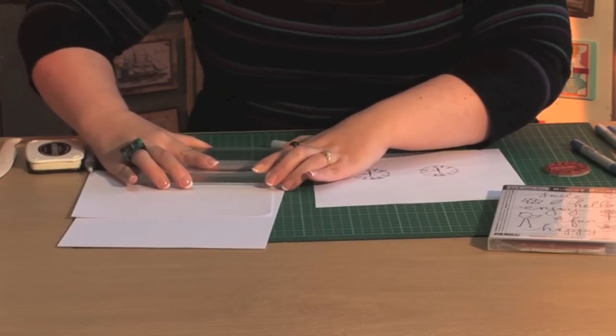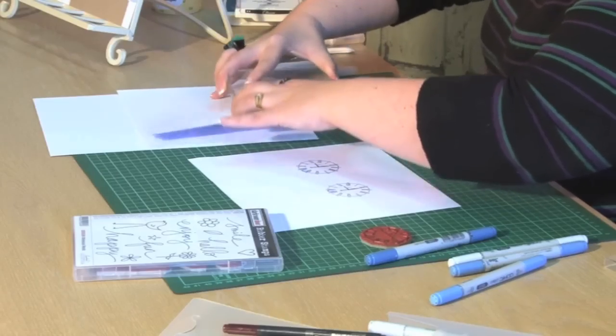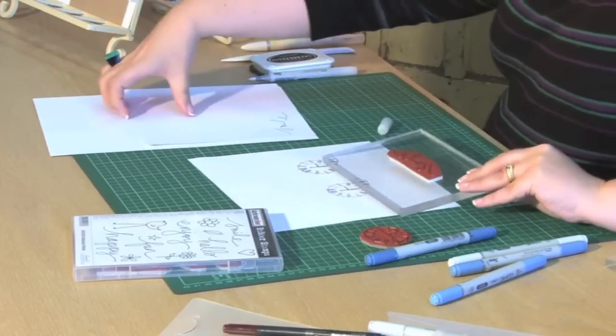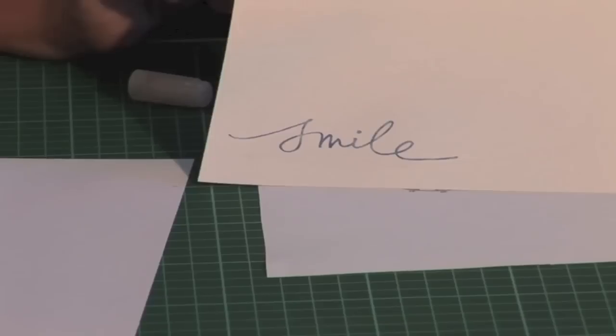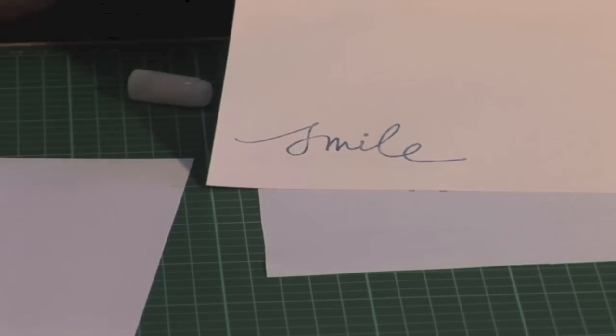When you stamp it and the Copic marker ink hits that colorless blender, it will be rehydrated and you are left with a perfect coordinating image to match the image that you just colored in.